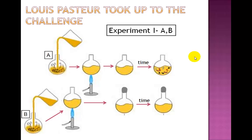Louis Pasteur, who was a professor of chemistry and the dean of the Faculty of Sciences in the University of Lille, France, took up the challenge of disproving spontaneous generation in 1859. In order to do so, he set up two experiments. Experiment 1 he divided into two parts, which we will identify by the flasks, flasks A and flasks B.